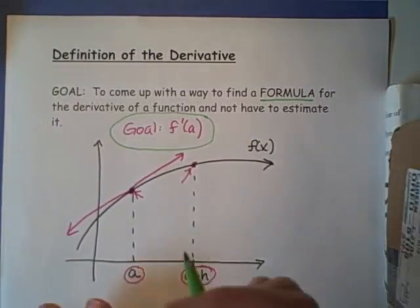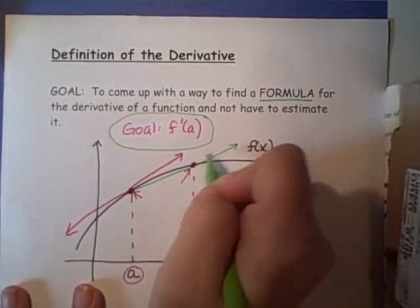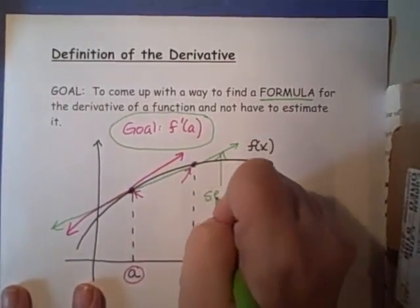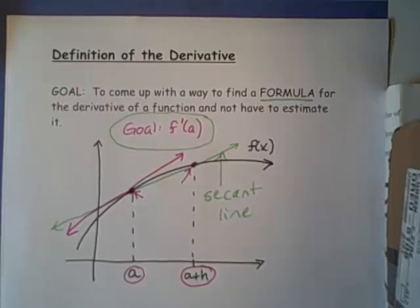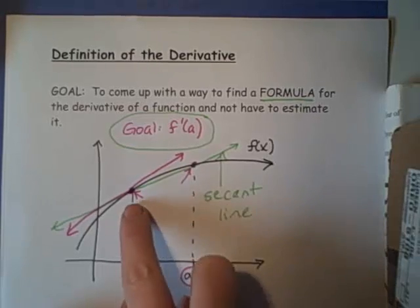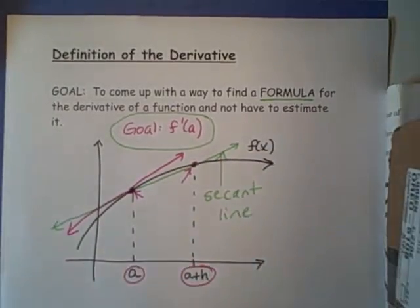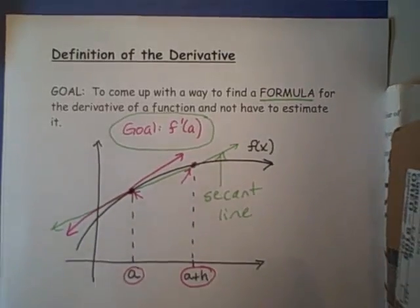So far when we're trying to find the slope of the tangent line, what we have done is we have found the slope of what's called a secant line. This green line is a secant line. We found the slope of that line, and if we make the distance between these two points — between a and a plus h — be really small, then the slope of the secant line is a good approximation for the slope of the tangent line. But what we want is to find a formula for it so we aren't having to estimate it all the time.